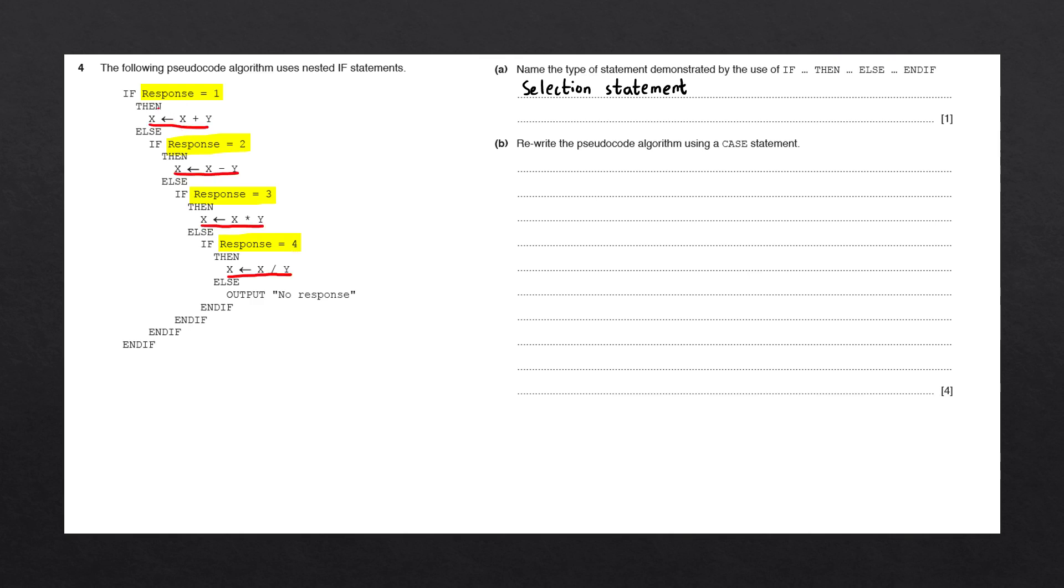Within each if statement, we're performing almost the same assignment statement. For the first one, we're saying x is assigned to x plus y. The second one is x minus y. Then x multiplied by y. Then for the last else statement, we're simply outputting no response.